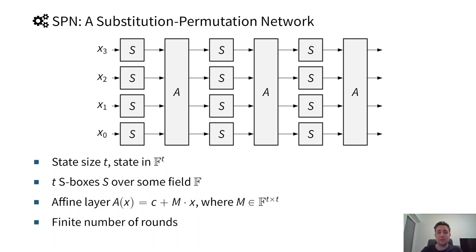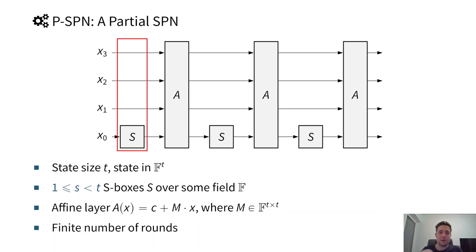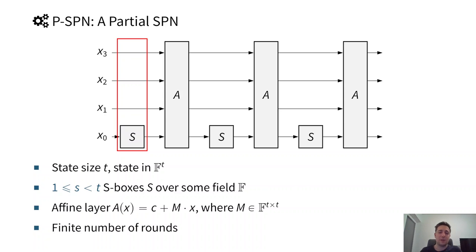This is an SPN. If we have a partial SPN, what we do is include, instead of a full non-linear layer, a partial non-linear layer. In this example, we use only one S-box instead of four S-boxes, but everything else stays the same. Most importantly, the affine layer stays the same.